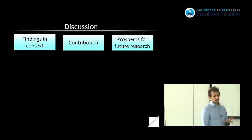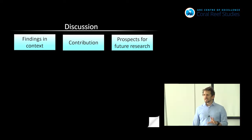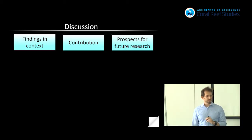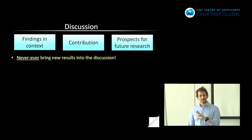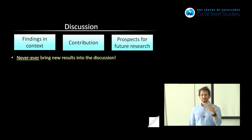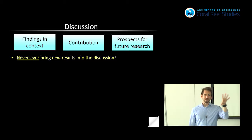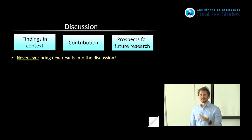The discussion section is where we put the findings into context, where we discuss our contributions, and where we talk about the prospects for future research. Never bring results into the discussion — if it's results, it belongs in the results section. If you've got results in the discussion section, you've missed part of your paper. If it's not addressing your research question, that's actually part of a different paper, and just because you've collected data on it doesn't mean the reader or reviewer is interested.